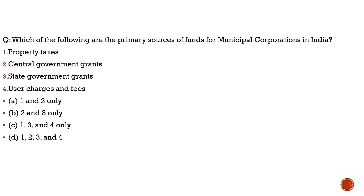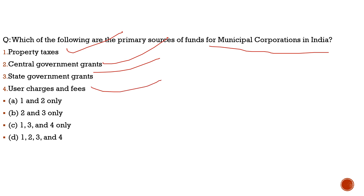Question four: which of the following are the primary sources of funds for municipal corporations in India? This is prompted by an RBI report that municipal corporation tax revenue share is rising. The sources are: property taxes — correct; central government grants and state government grants — correct; user charges and fees such as water charges and electricity — correct. All four statements are correct, so the answer is option D.